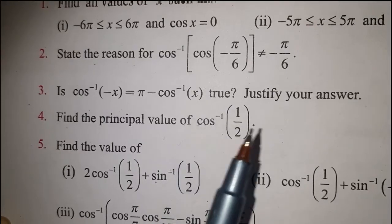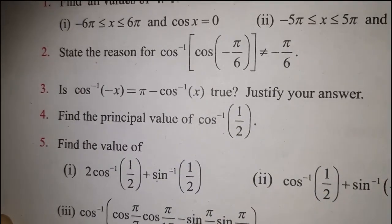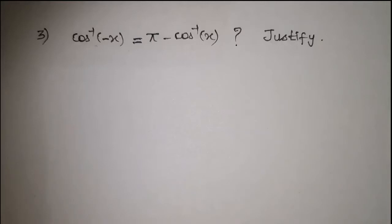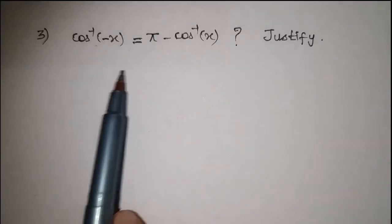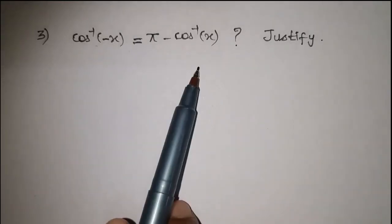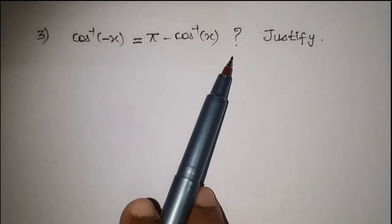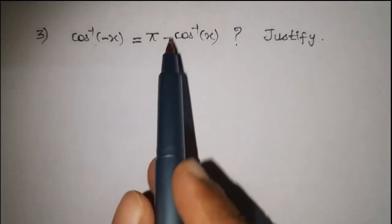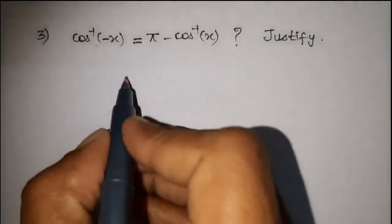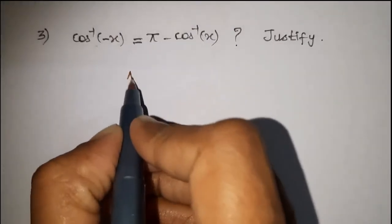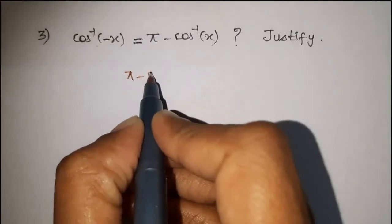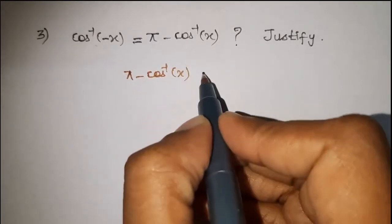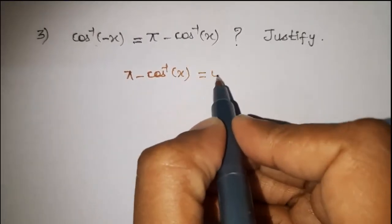It is true. We need to justify it. Since the equation is true, we need to check it. Let us take the right hand side value as y. So, pi minus cos inverse of x is equal to y.